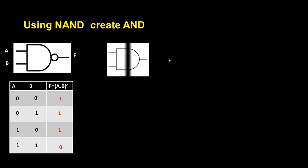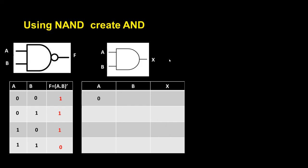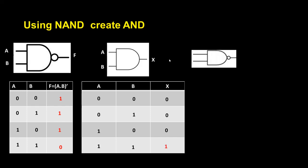This is my NAND gate with two inputs and one output. This is my truth table — for A and B I write the possible input combinations. Now, NAND gate output followed by a NOT gate: A and B feed into the NAND gate, X is the NAND gate output, and I convert it to the opposite value as F.